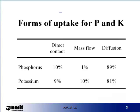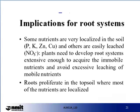There are different forms in which different nutrients can be taken up. For example, potassium and phosphorus are shown in the table. About 10% of phosphorus is taken up by direct contact, 1% by mass flow, while most of the uptake is by diffusion. This is similar to potassium, with 9% taken up by direct contact, 10% by mass flow, and 81% by diffusion. The forms of nutrient uptake have implications for root systems. Some nutrients are very localised in the soil — for example, potassium, phosphorus, zinc and copper — while others are easily leached, for example nitrate. Plants need to develop root systems extensive enough to acquire the immobile nutrients and avoid excessive leaching of the mobile nutrients.